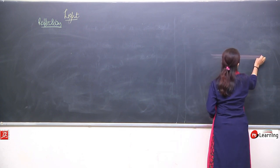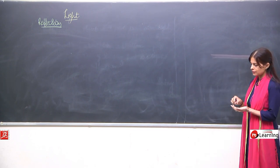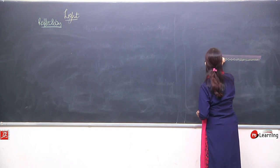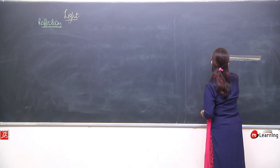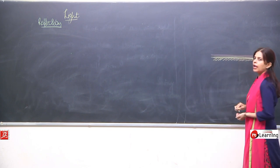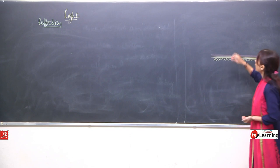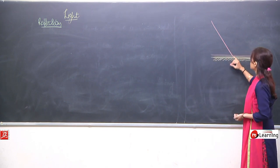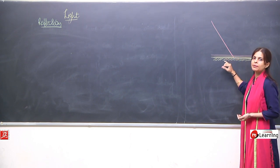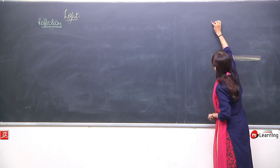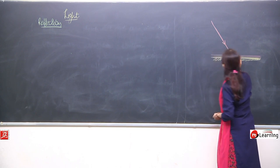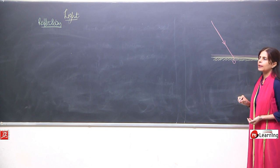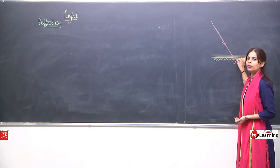This is a reflecting surface, shown with short oblique lines. When a ray of light falls on this reflecting surface, we can denote the point of contact as O. This ray of light which falls on the reflecting surface is what we need to define.